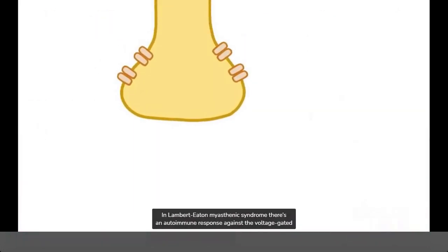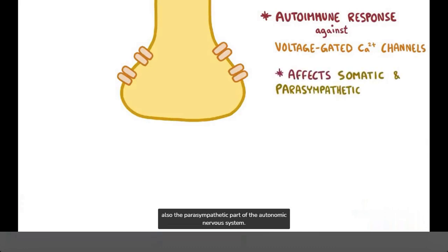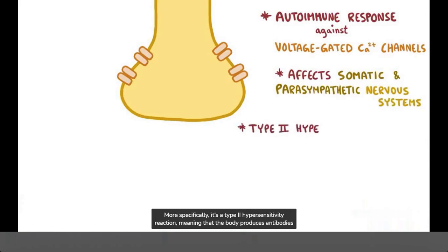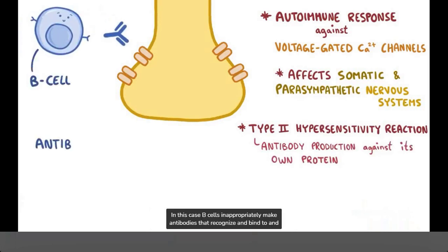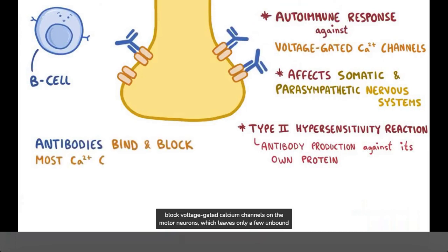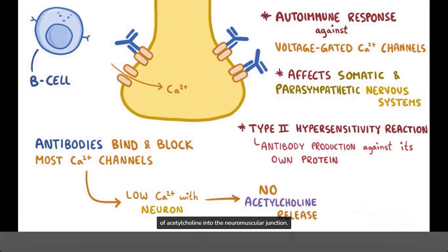In Lambert-Eaton myasthenic syndrome, there's an autoimmune response against the voltage-gated calcium channels on the motor neurons, mostly affecting the somatic nervous system, but also the parasympathetic part of the autonomic nervous system. More specifically, it's a type 2 hypersensitivity reaction, meaning that the body produces antibodies against its own proteins. B cells inappropriately make antibodies that recognize, bind to, and block voltage-gated calcium channels on the motor neurons, which leaves only a few unbound channels available to open and allow calcium in. When only a few of the channels are working, they can only generate a low level of calcium within the neuron, which is insufficient to trigger the release of acetylcholine into the neuromuscular junction.